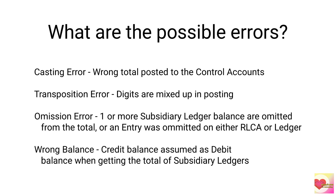First is the casting error: wrong totals posted to the control accounts. They could be either overcasted or undercasted. This applies to casting sales or purchases daybook and cash book. Sometimes if the columns are totaled manually, there could be an error in the totals, and that incorrect total will be posted to the control accounts.